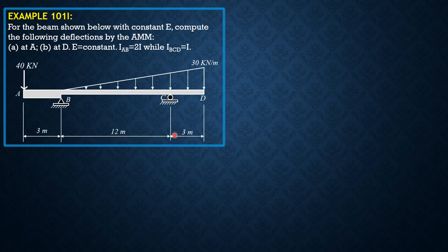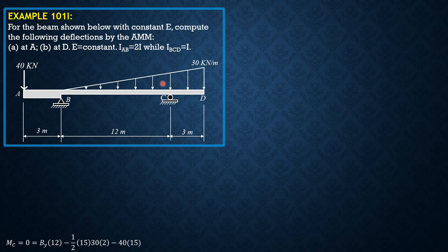First, let's compute the reaction at B and select D as the moment center. Setting the sum of moments equal to zero: BY times 12, minus one-half of 15 times 30 times 2 — because one-third of 15 is 5, and there is already 3 here, so this distance is 2 from centroid to C — and minus 40 times 15. So BY equals 87.5 kilonewtons.